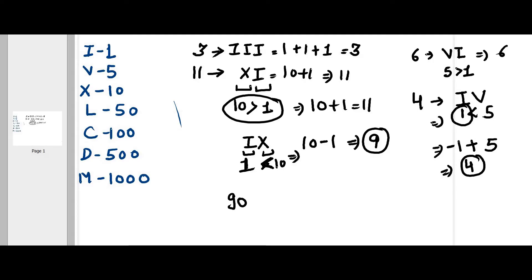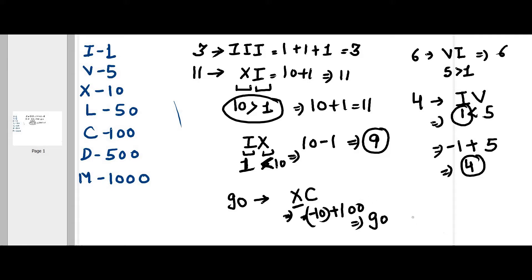For 90, that's 100 minus 10. C is 100, and to subtract 10 you write the symbol for 10 before C: XC. Since 10 is less than 100, X is treated as minus 10, so minus 10 plus 100 equals 90. This is how numbers are formed using the subtractive notation.